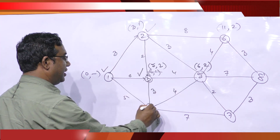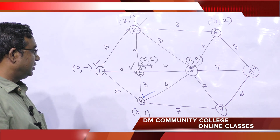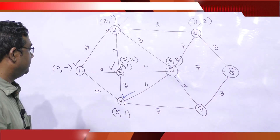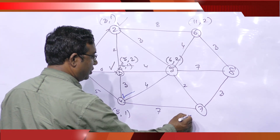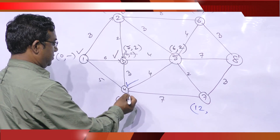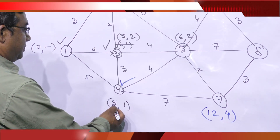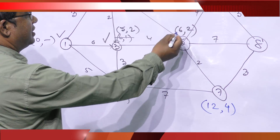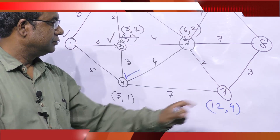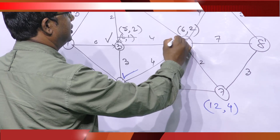The working levels remain the same. Select the smallest: 5 is less than 6, so select node 4 and tick it. Now let us see the unticked nodes directly connected to node 4: node 7 and node 5. Node 7: 5 plus 7 equals 12, label (12, 4). Node 5: 5 plus 4 equals 9, which is greater than 6, so it remains unchanged. 6 is less than 12, so tick node 5.